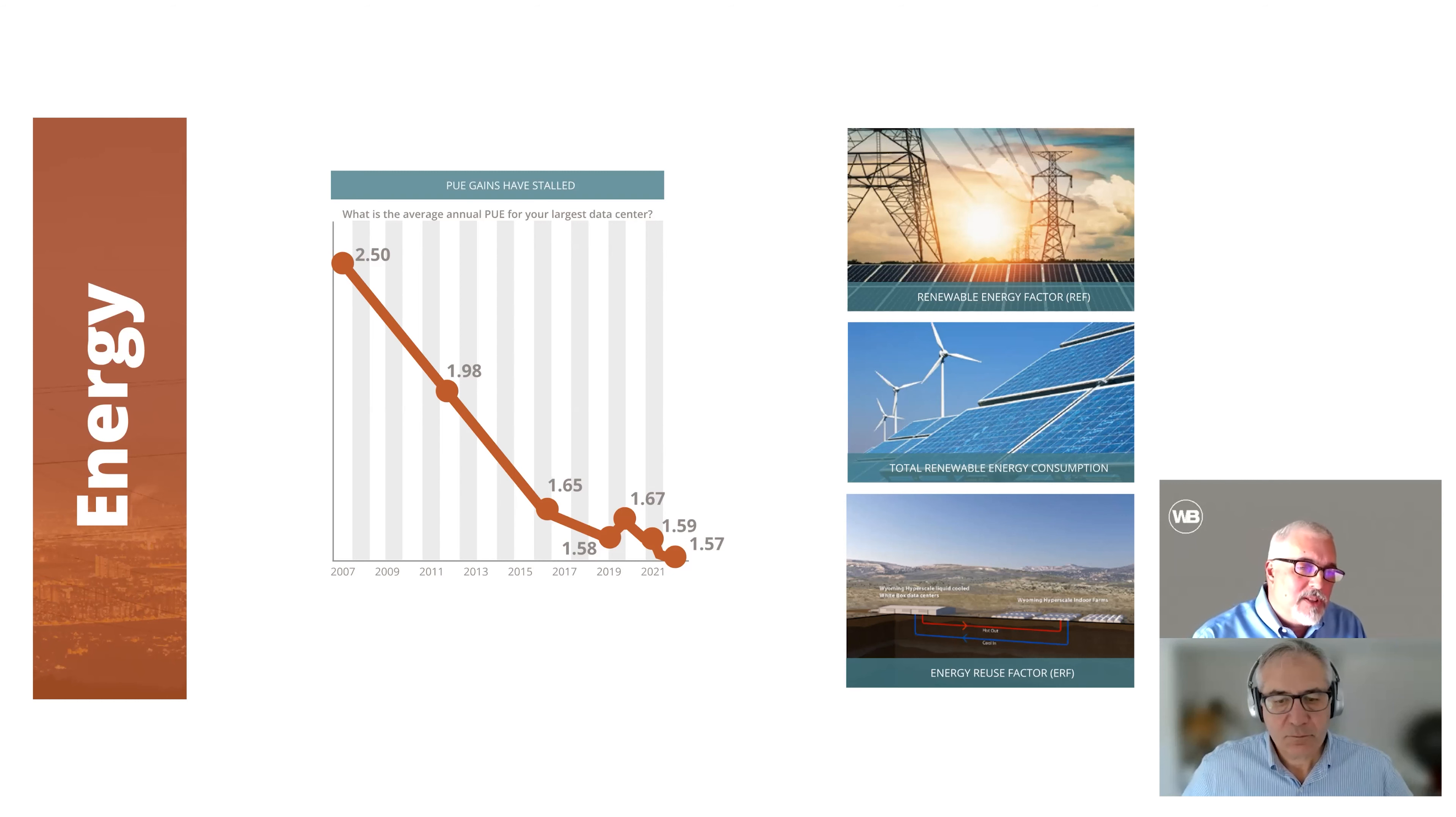And this was from Uptime Institute. They surveyed the largest data centers in the country. We don't design things to 1.57. I think most of the clients we're seeing now is in the 1.3 to 1.4 range. But these were the larger hyperscale guys. So you can see it's leveled off. So now we've got to figure out what's the next way to start reducing energy.